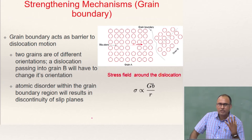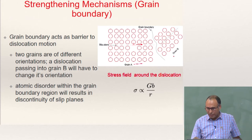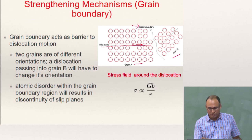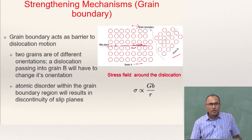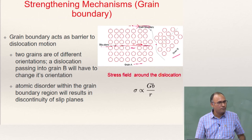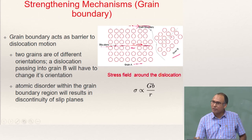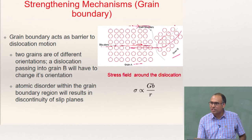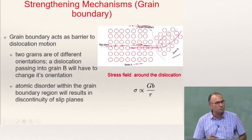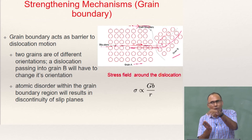A grain boundary is a defect in a crystalline material. What is the implication of that defect for dislocation motion? Let us say you have grain A and grain B. In grain A, this is your slip plane and the dislocation is moving in the slip direction. When you apply shear stress, the dislocation moves in this direction, and the moment it encounters a grain boundary, further slip is not possible because there is a misorientation. The neighboring grain does not have the same orientation — the slip plane is in the other direction. There is a misorientation mismatch, and as a result the dislocation simply cannot move past the grain boundary.